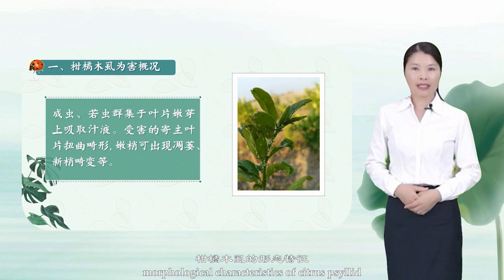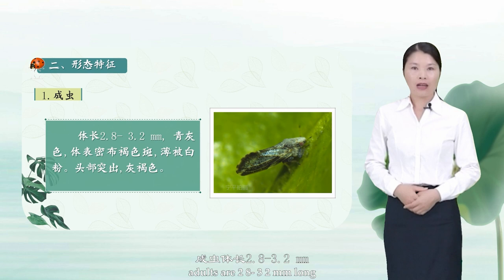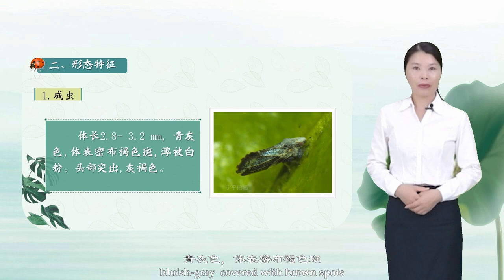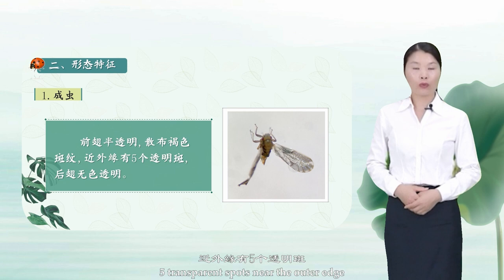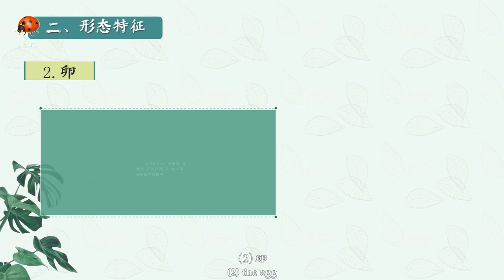Morphological characteristics of citrus psyllid. One: Adult. Adults are 2.8 to 3.2 mm long, bluish-gray, covered with brown spots and white powder. They have a protruding gray head, translucent front wings with scattered brown markings, five transparent spots near the outer edge, and colorless transparent hind wings.